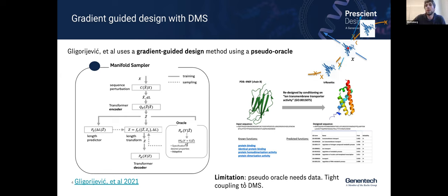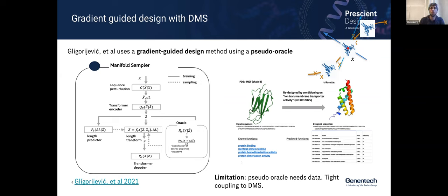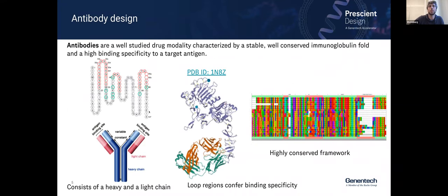Additionally, perhaps this oracle is not informed by the hidden representation — whatever the latent dimension captures could not be correlated with some property of interest. This type of coupling to the deep manifold sampler is also not exactly advantageous. This is the gradient-guided design framework that we seek to replace with multi-segment preserving sampling.